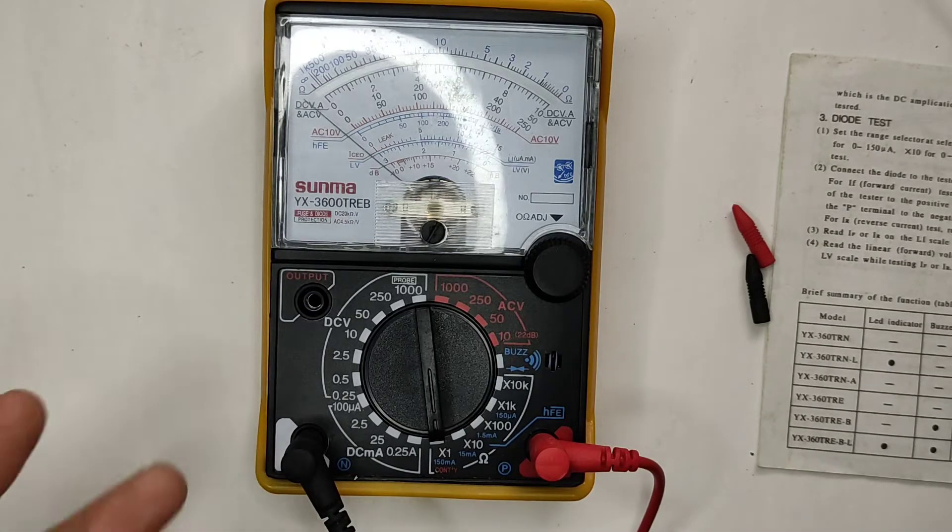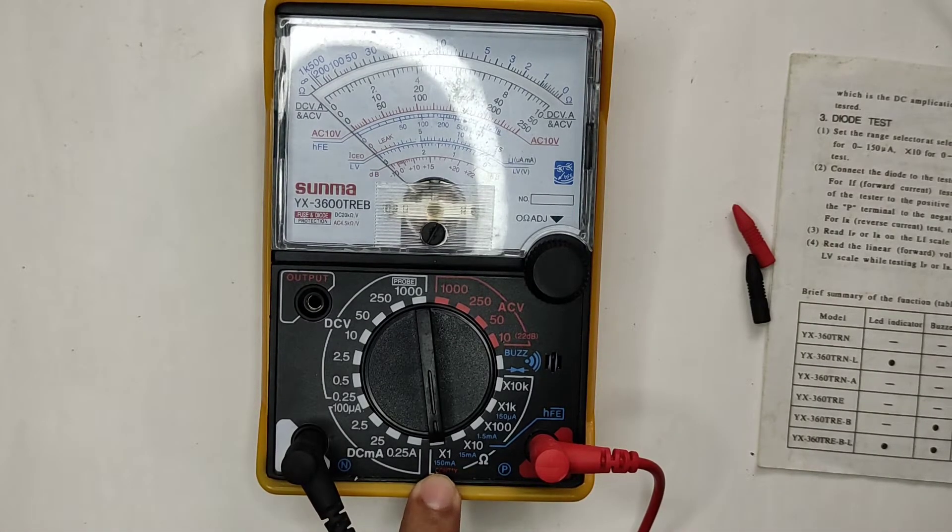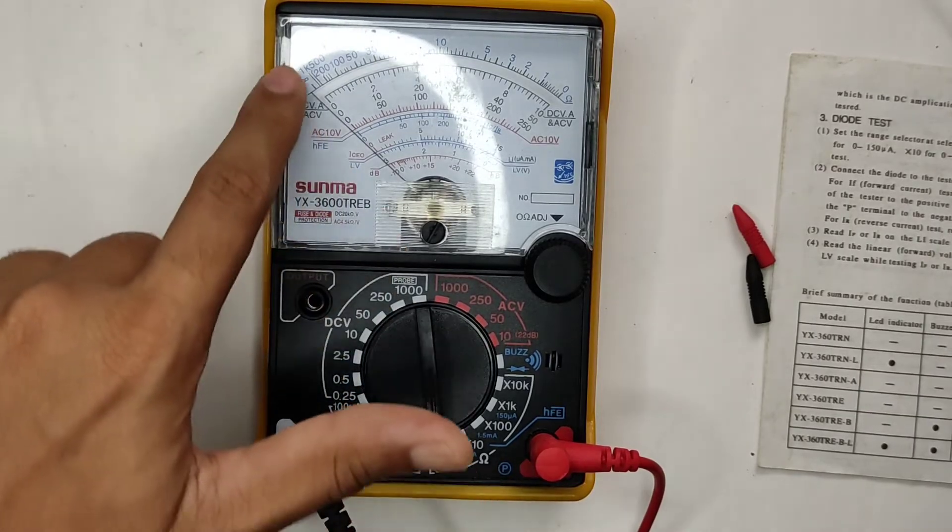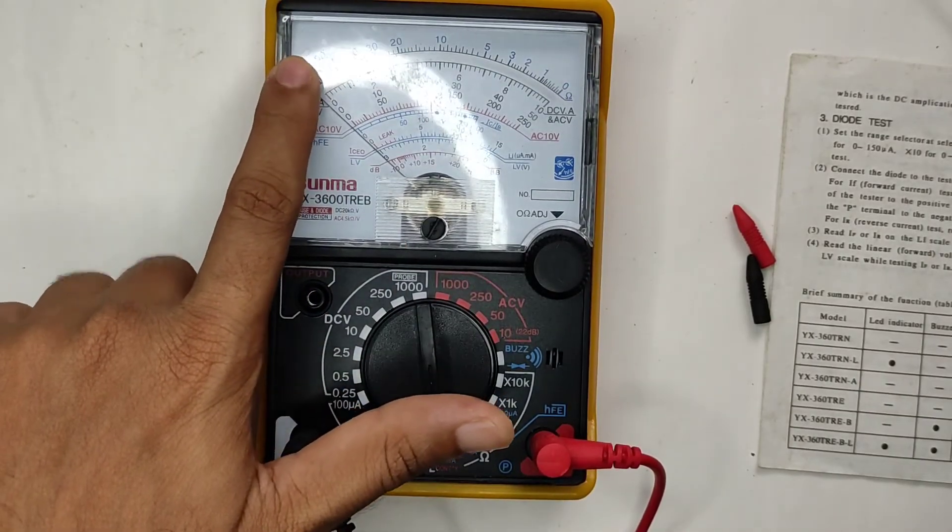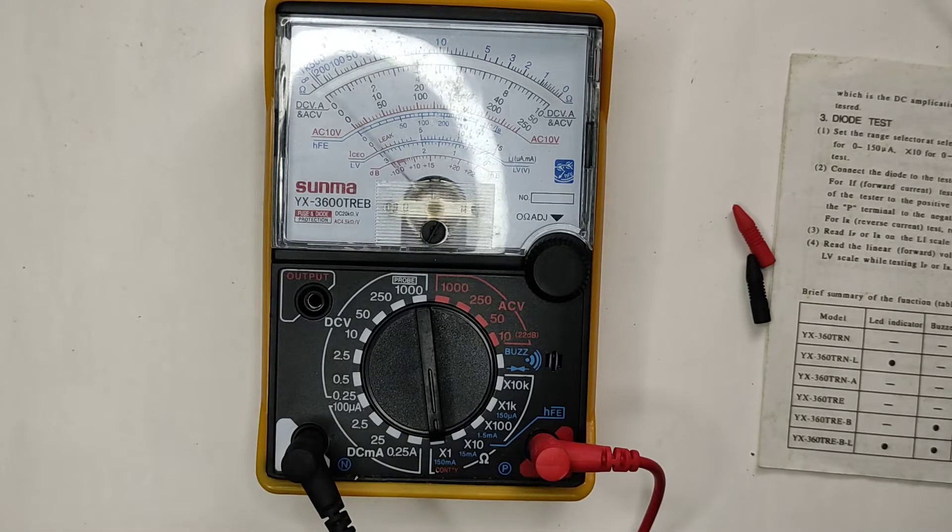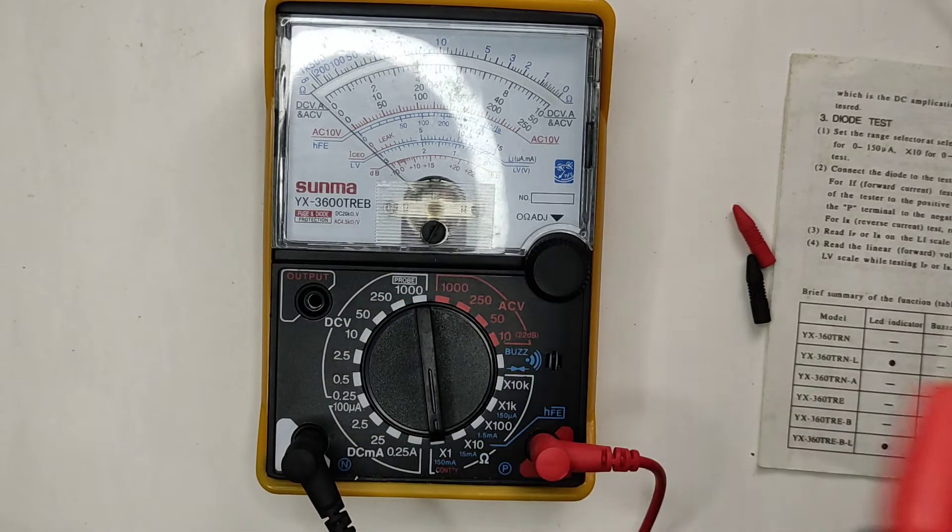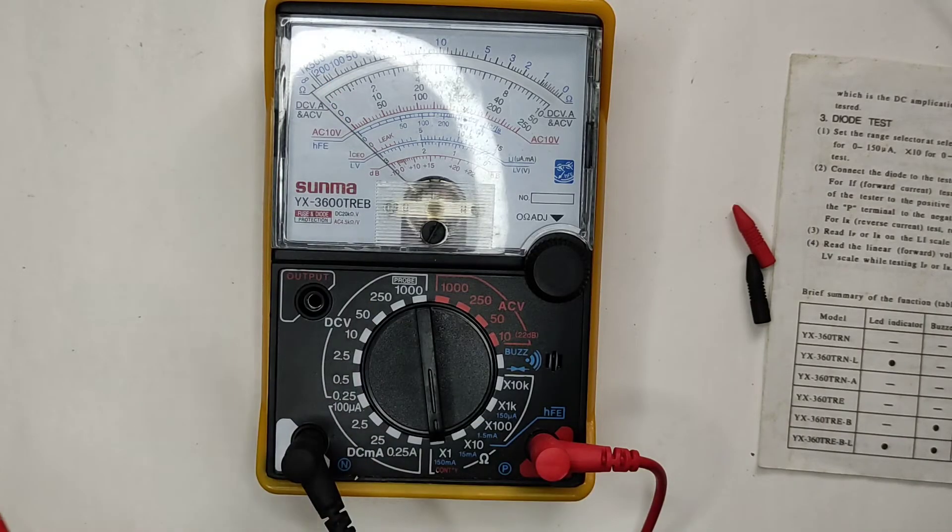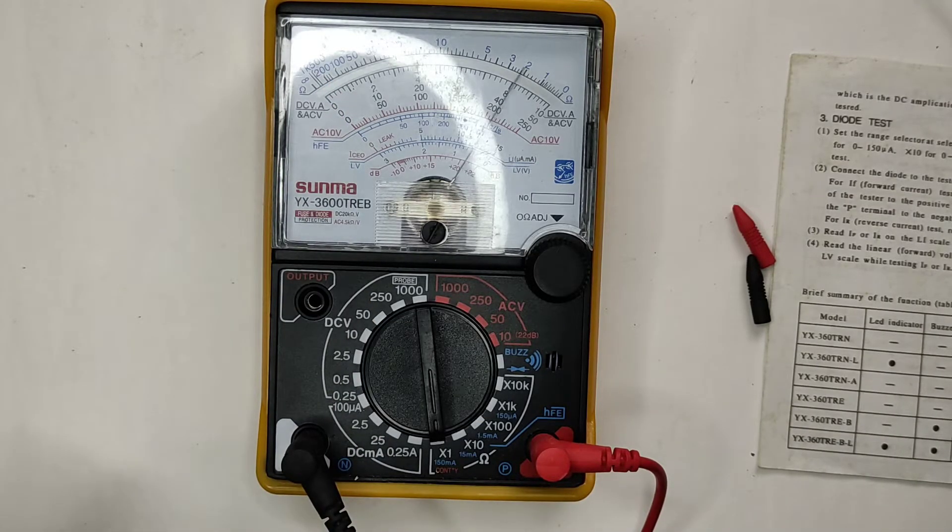In the other multimeters, if it had that LED, if this was TREBL, then that LED that was supposed to be here will also light in this condition. So that's what we are trying to make in this video. We will add a red LED in this.